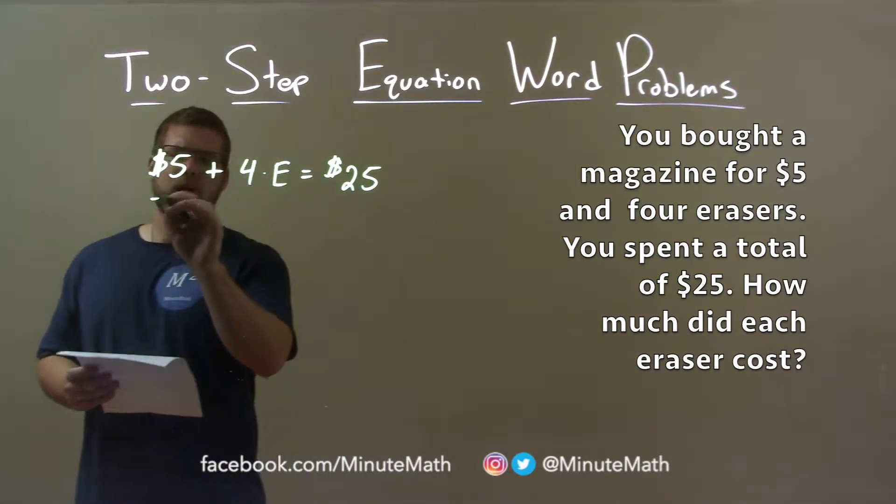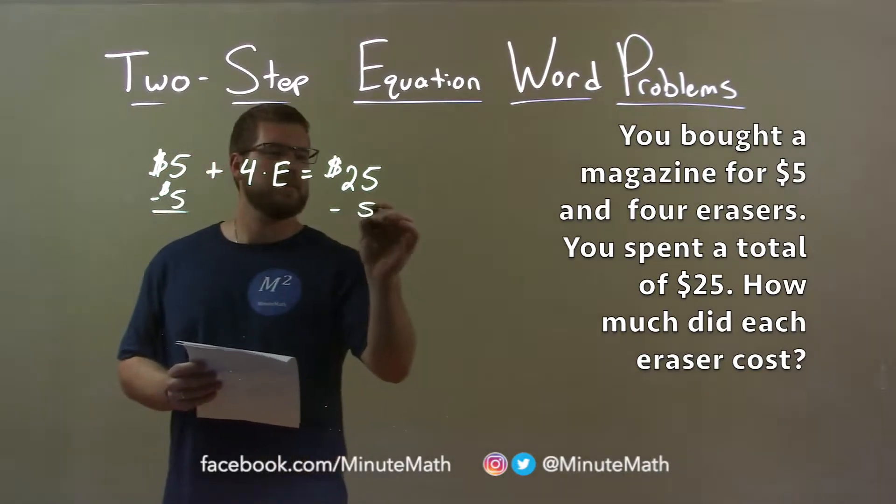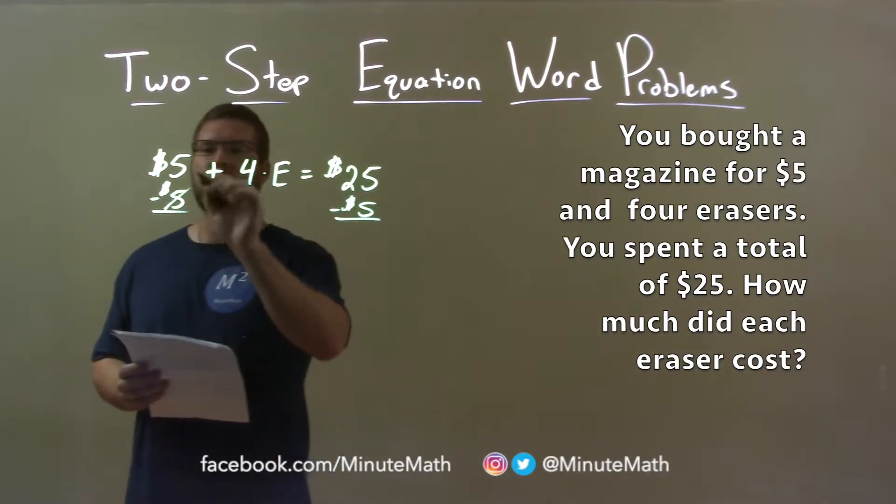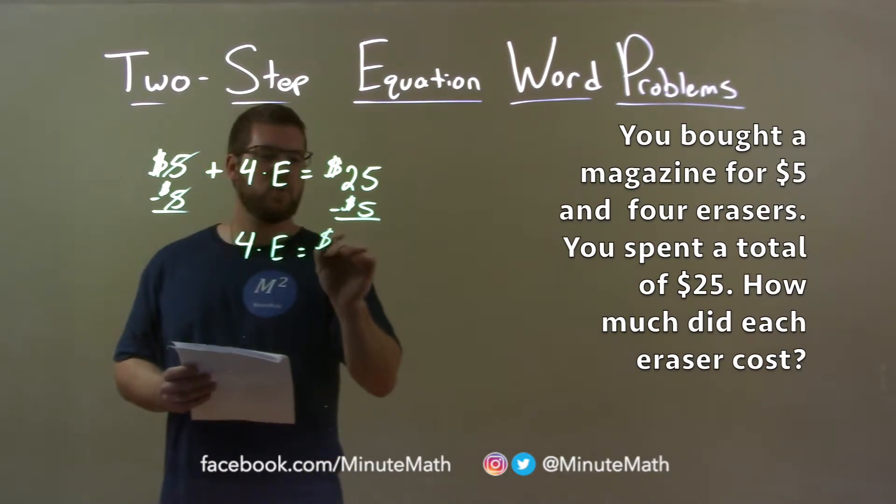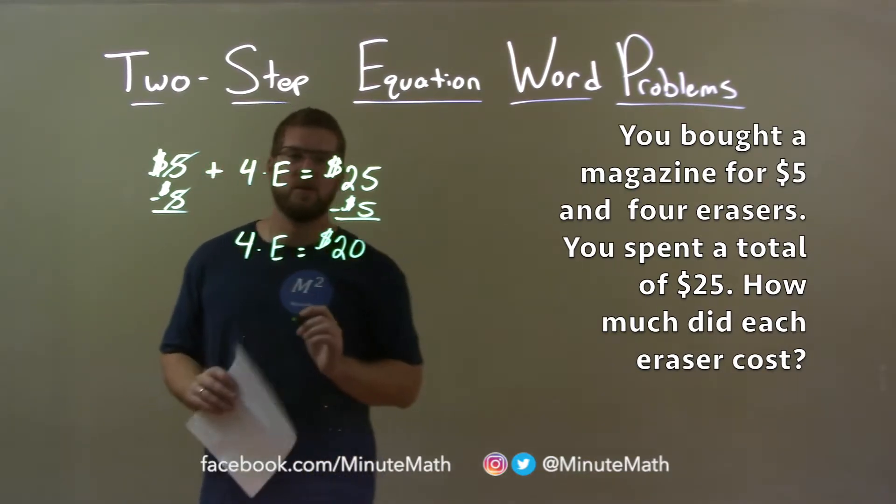Well, first step is I subtract $5 to both sides. This will leave me, the fives cancel, four times E equals $20. So, all four erasers now cost me $20.